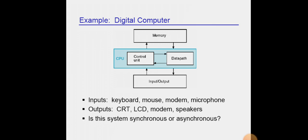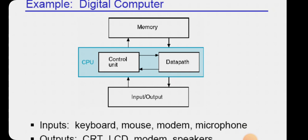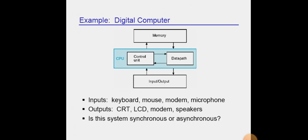Example of digital computer. Memory, control unit, datapath, input and output. Inputs: keyboard, mouse, modem, microphone. Outputs: CRT, LCD, modem, speakers.